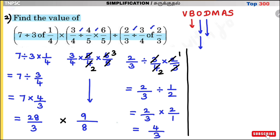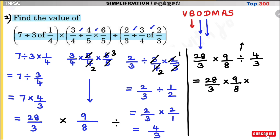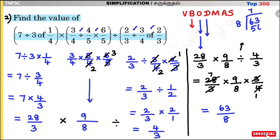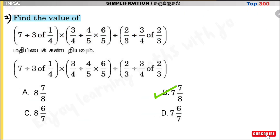Now combine the bracket results. We have multiplication and division remaining. Applying BODMAS: 28/3 into 9/8 — first division, then multiplication: 28/3 × 9/8. Cancel: 3 3s cancel, 1 4s of 4, 7 4s of 28. Result is 63/8. Then 63 divided by 8: 7 eights are 56, remainder 7. So the answer is 7 and 7/8. Option B: 7⁷⁄₈.